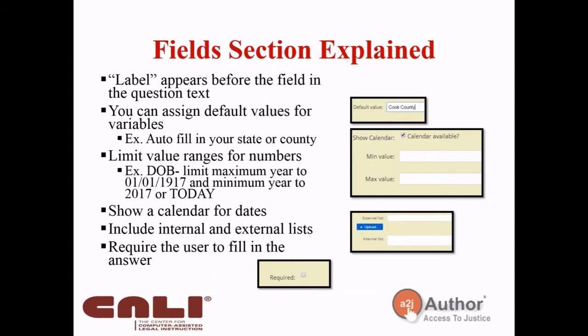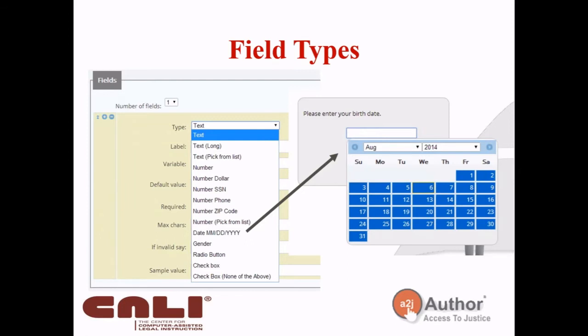You can also add calendars, calculators, and internal or external XML lists for drop-down options. The field types available include: text, number, dollar, social security, phone, zip, number from a list, date, gender, radio buttons, checkbox, and checkbox with none-of-the-above. The type controls how the field is displayed and what input is accepted — for example, a number field won't allow letters, and a date field only accepts month/day/year format.